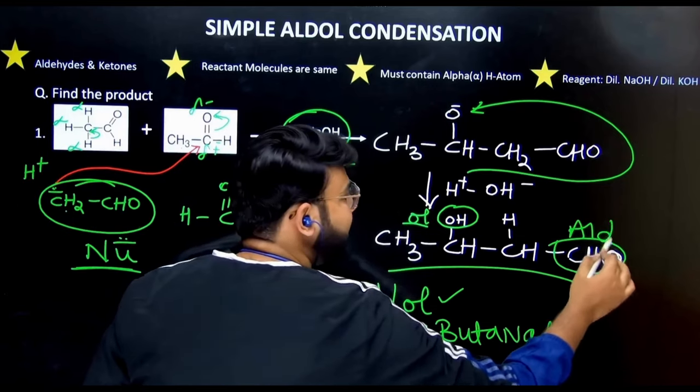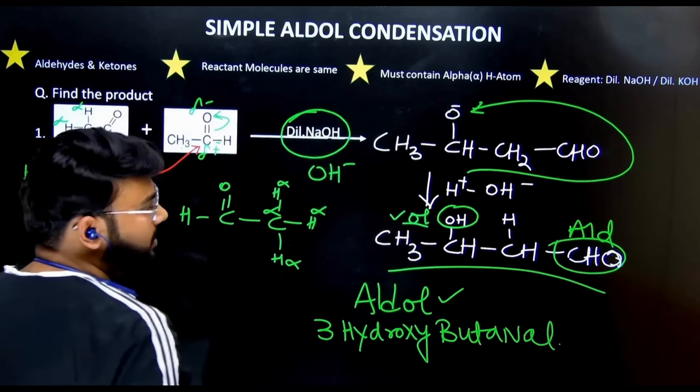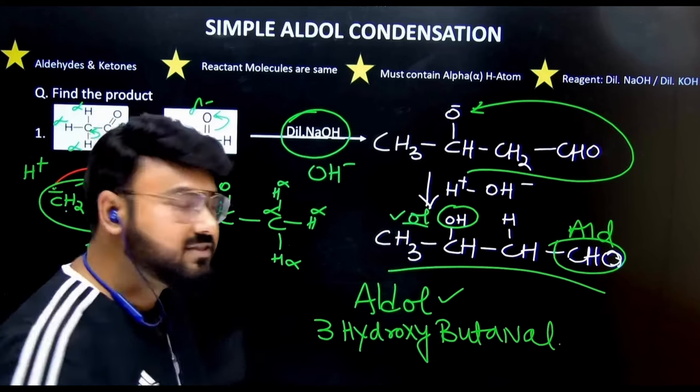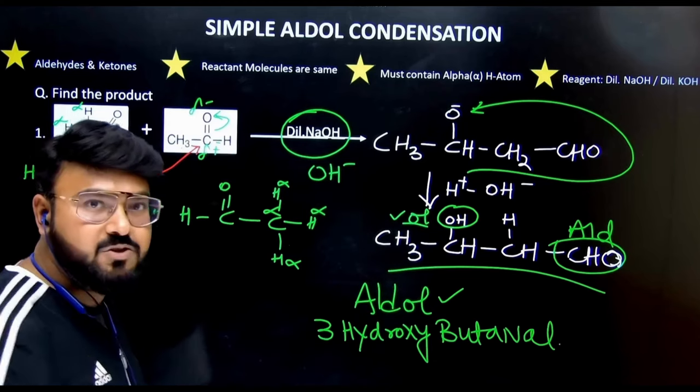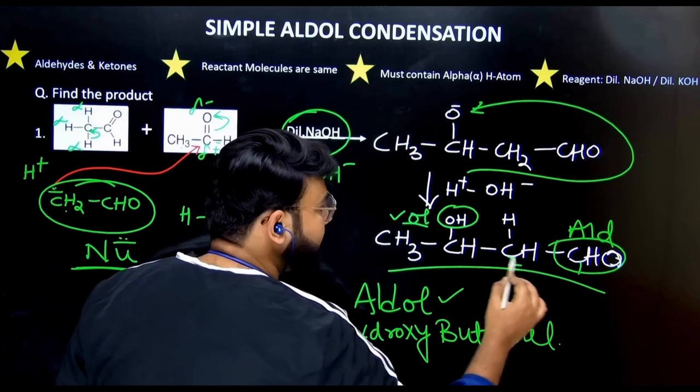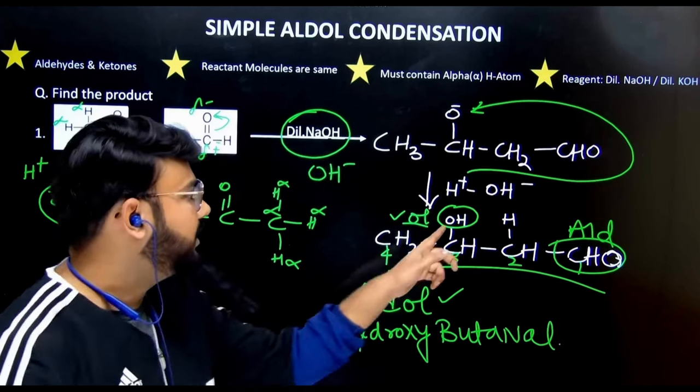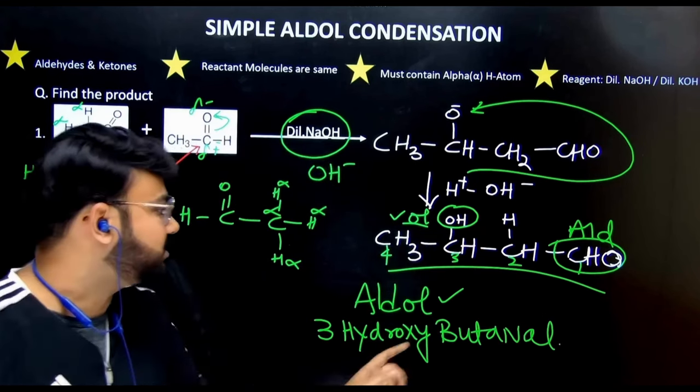This is the aldehyde part. This is the alcohol part, all forming aldol. What will be the IUPAC name? So aldehyde has the preference over alcohol. So this will get number one, number two, number three and fourth position. So OH is on the third position. So 3-hydroxybutanal.